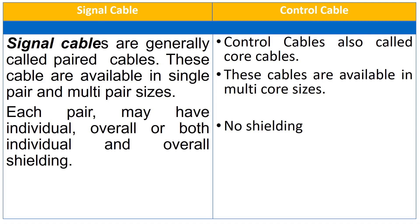The signal cables are generally called pair cables. These cables are available in single-pair and multi-pair sizes. Each pair may have individual, overall, or both individual and overall cable shielding. While the control cables are also called core cables. These cables are available in multi-core sizes. No shielding is required in control cables, but in some cases the control cables may have cable shielding.